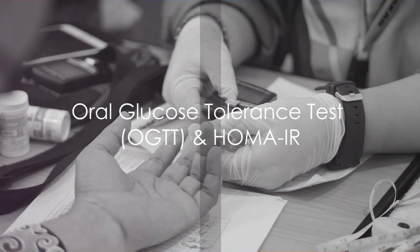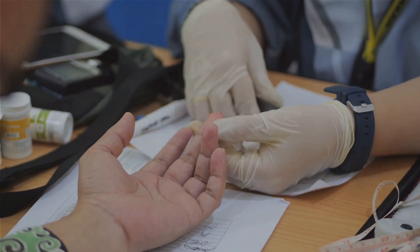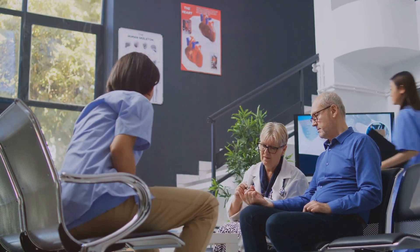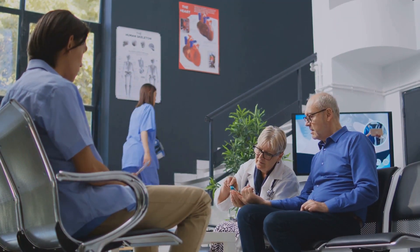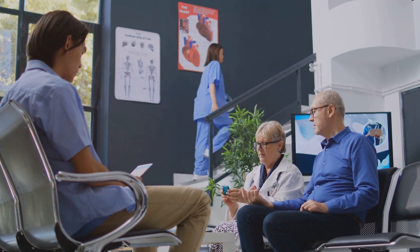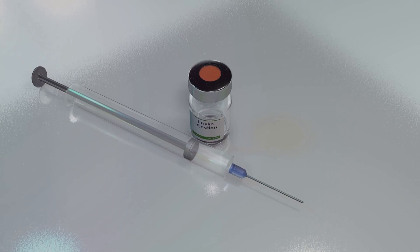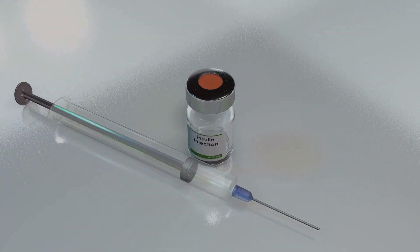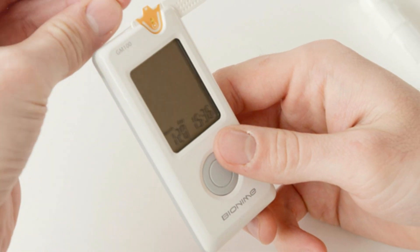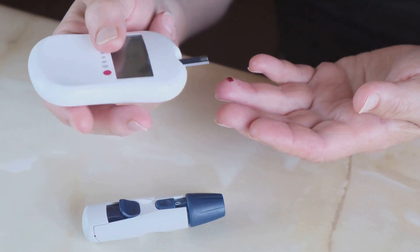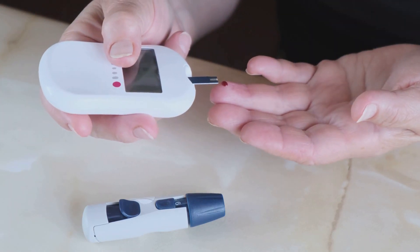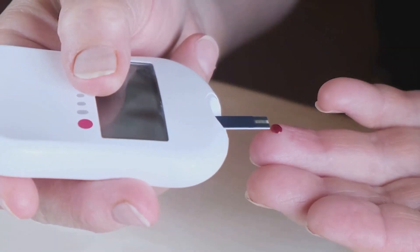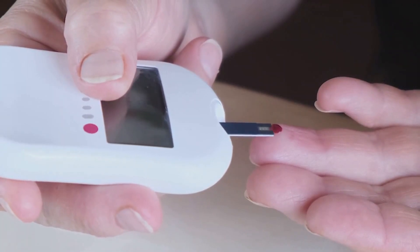Moving on, we have the Oral Glucose Tolerance Test and HOMA-IR. Let's start with the Oral Glucose Tolerance Test, often abbreviated as OGTT. This test measures how your body responds to a glucose load over a specific period of time. It's like a stress test for your insulin response. You consume a drink with a high glucose concentration and then your blood sugar levels are measured at intervals. This process can give a detailed picture of how your body manages a sudden influx of glucose.